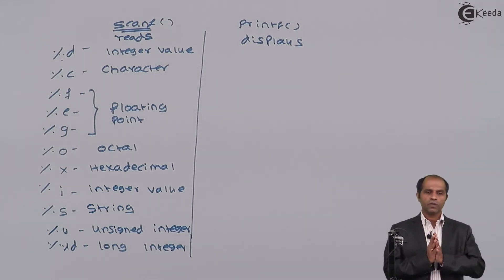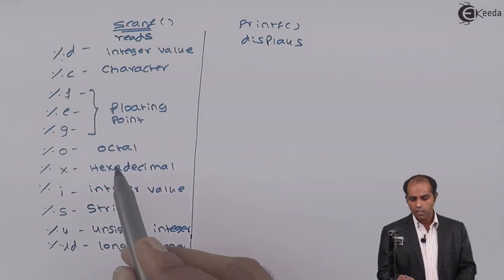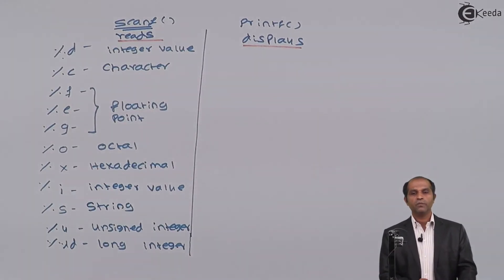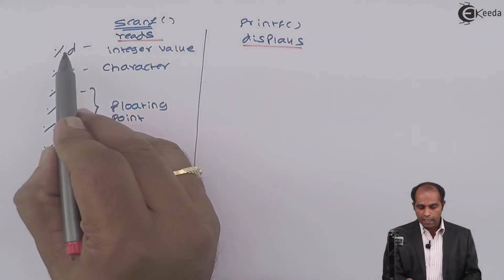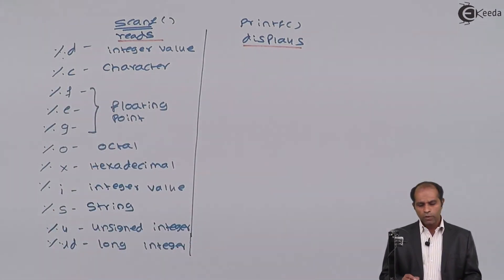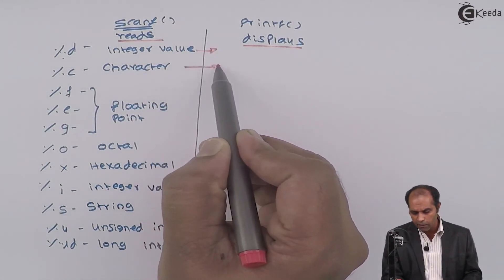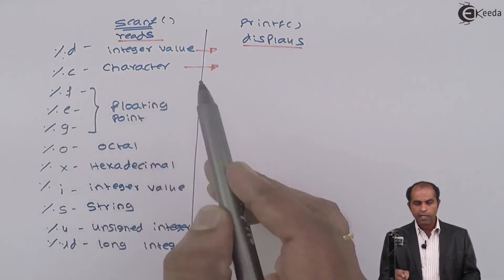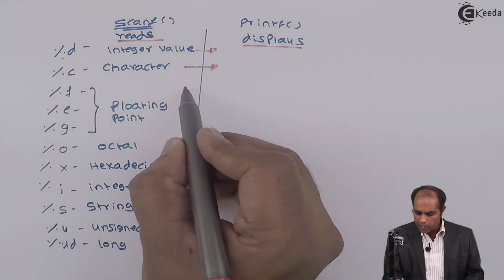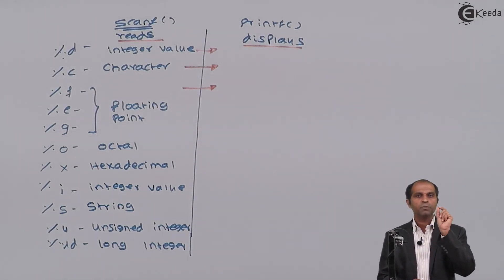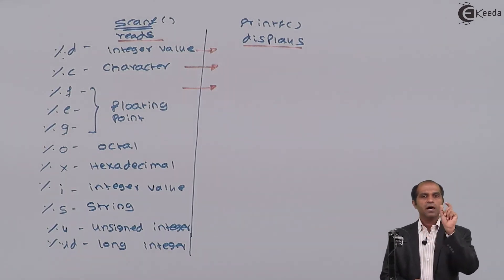The basic data types are read using specifiers: %d, %c, %f/%e/%g for float values, and %s for string values. Now let's look at the same specifiers when used with printf. printf displays values — so %d displays a decimal integer value, %c displays a character value. The %f specifier displays a floating point number with six fractional digits. If there are fewer digits, it adds zeros; if there are more, it displays the entire number.